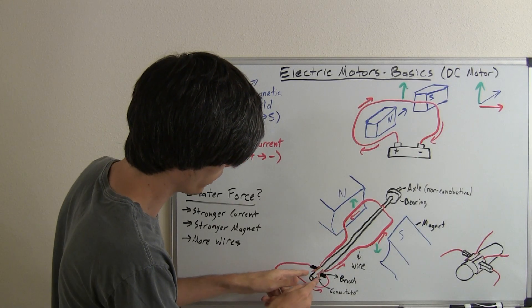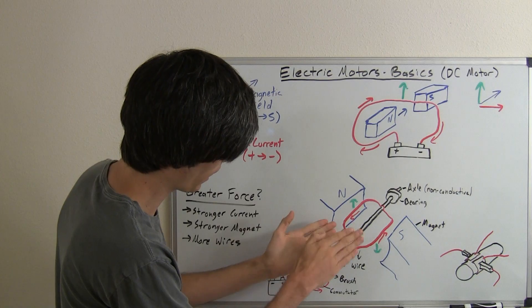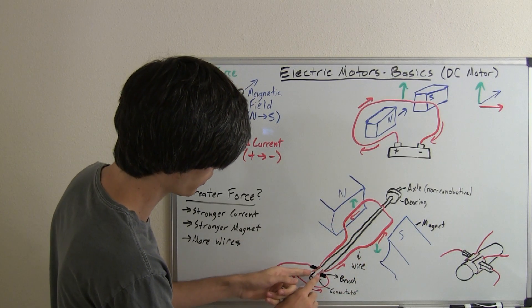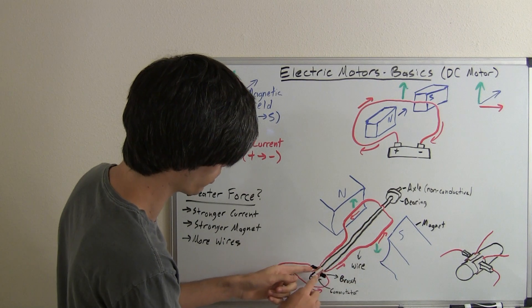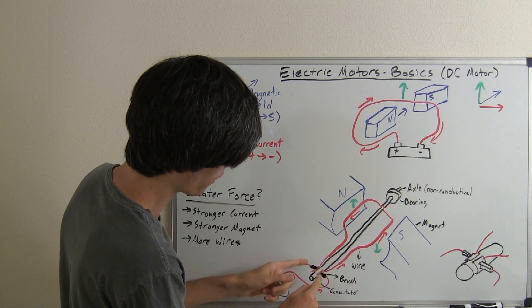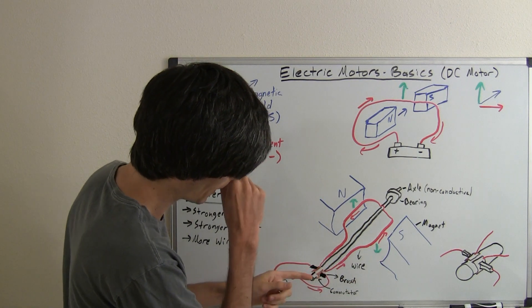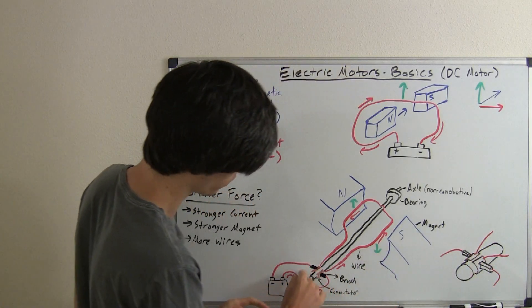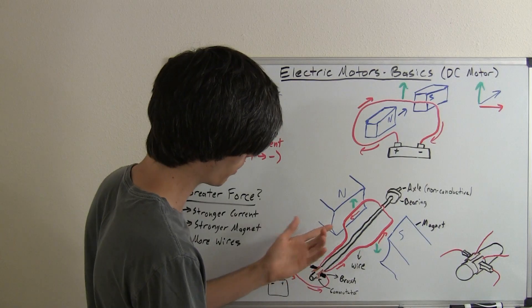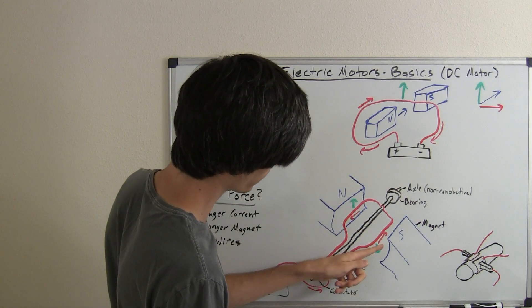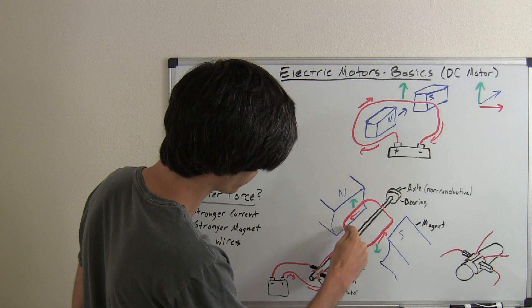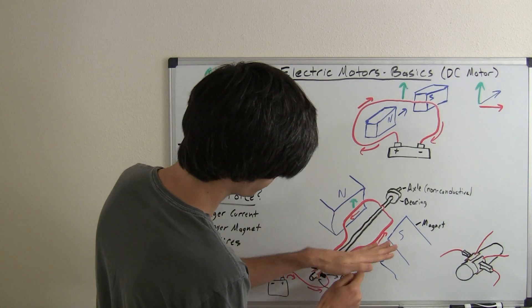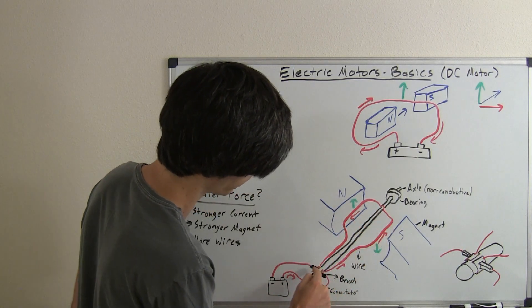So what happens is these commutators, as this wire switches over to the other side and the commutators are also moving, rotating with it, but the brushes aren't, the current is going to switch. I've got it zoomed in a little bit here so that it's a little more clear as far as what's going on there. But basically once this side of the wire gets over here, the current is no longer going to be flowing this direction, it's going to be flowing that direction. So once it's over here, it'll look just like it is depicted here.